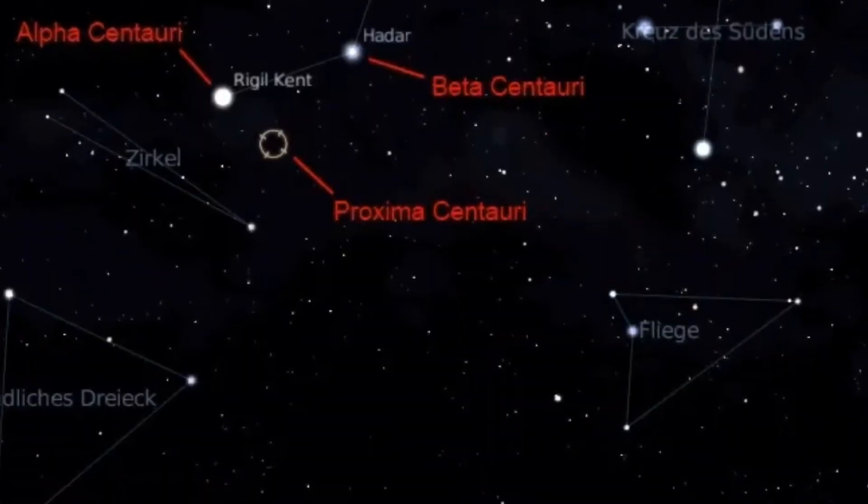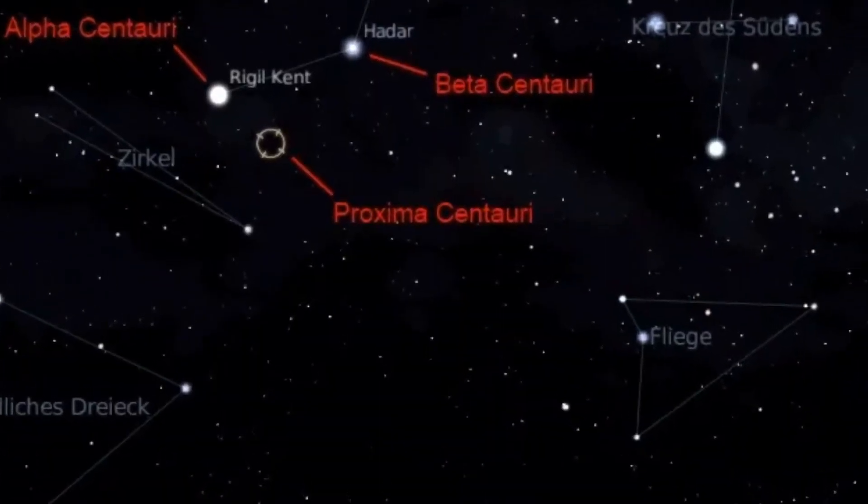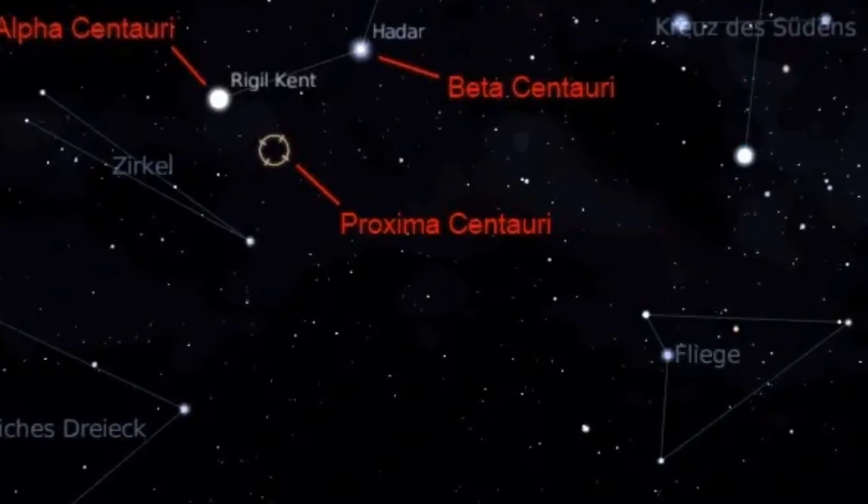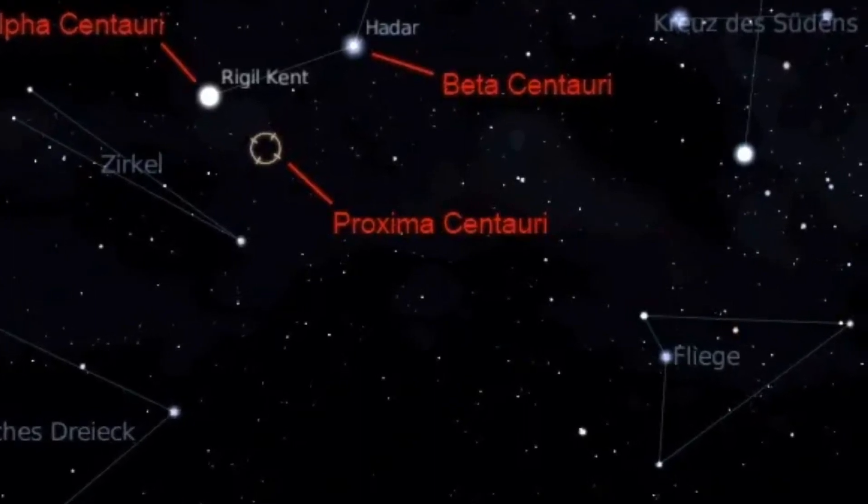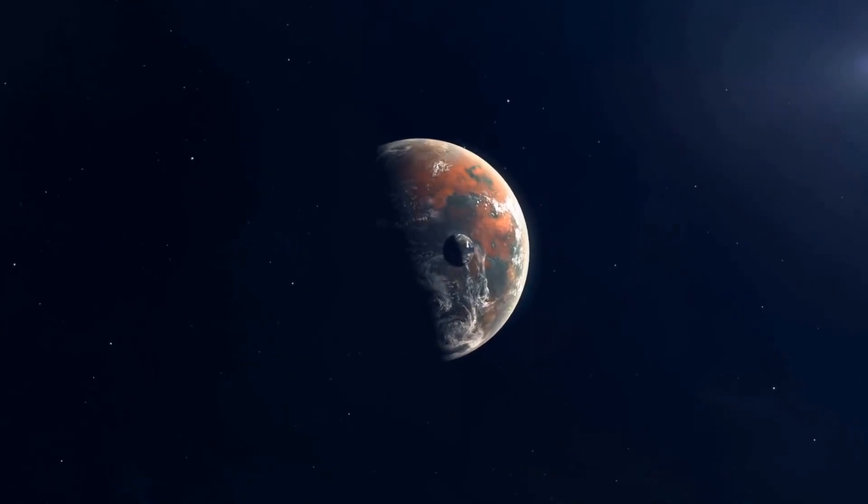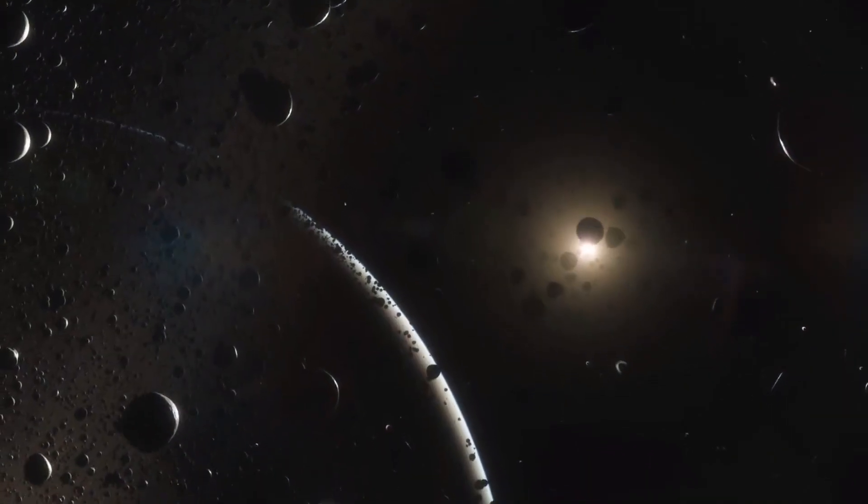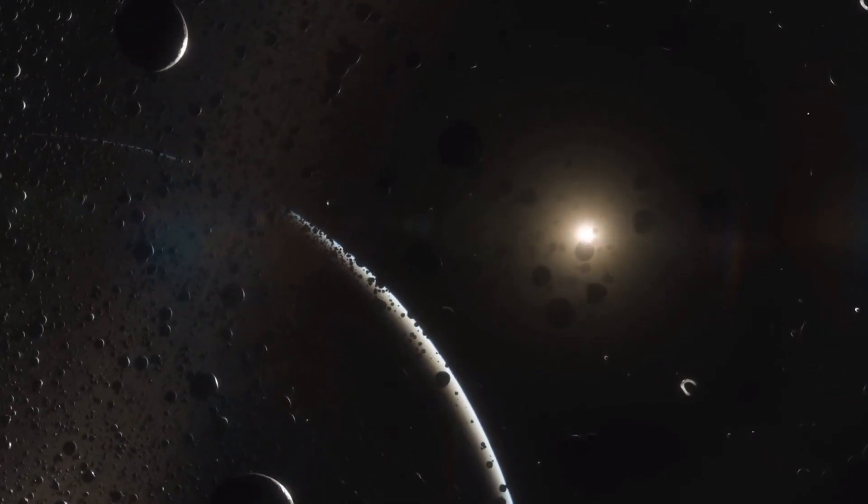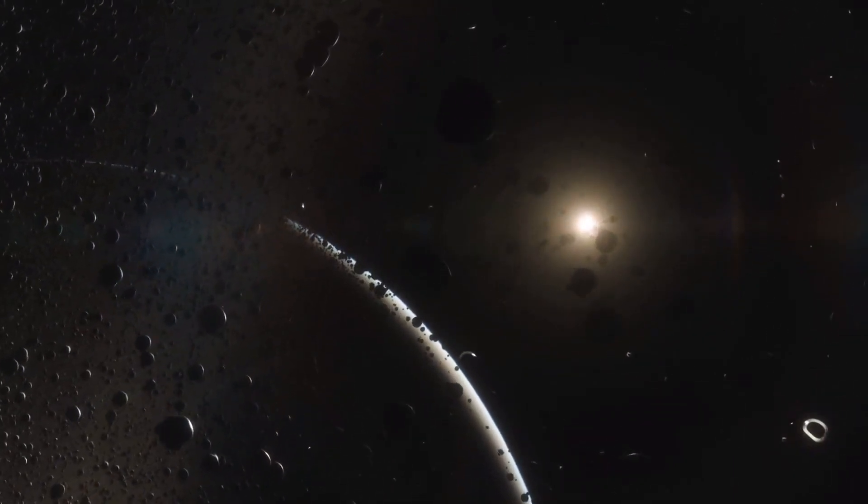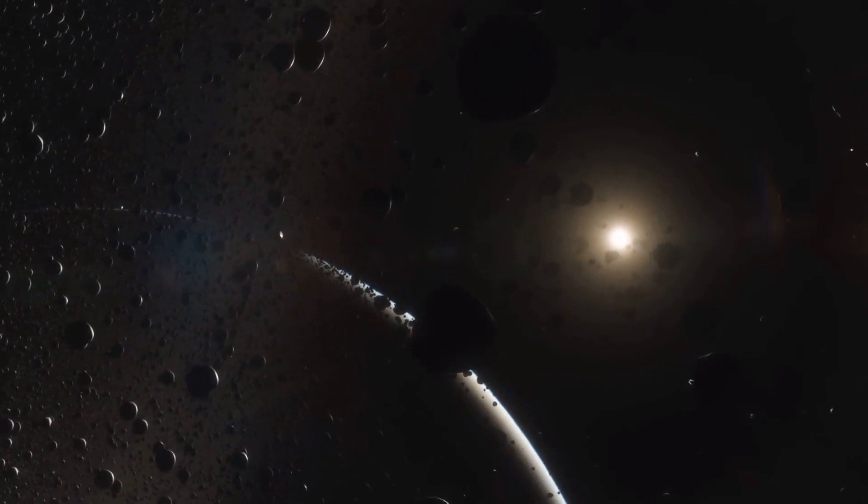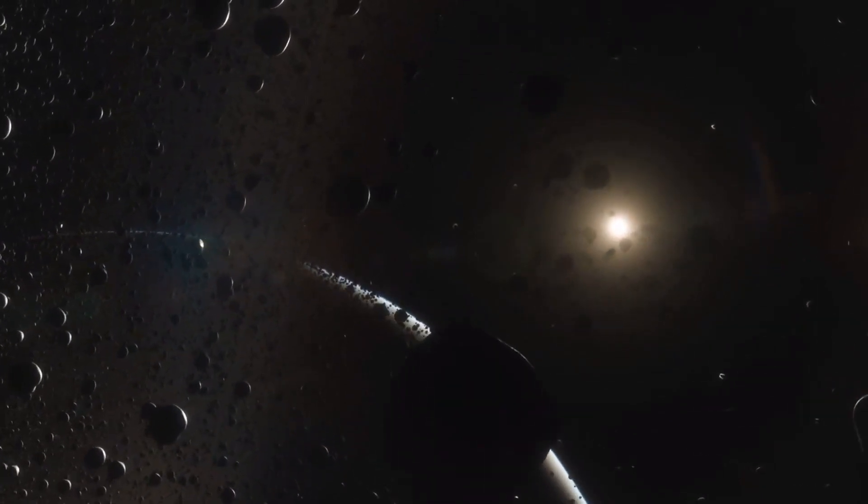The challenge intensifies when dealing with a star as dim as Proxima Centauri, akin to spotting a firefly in a blackout. What if Proxima b is not merely sitting in the dark, but boasts a civilization with advanced lighting technology? The concept of celestial engineers using gigantic mirrors to bounce sunlight strategically from the day side to the night side adds an intriguing twist to the narrative.